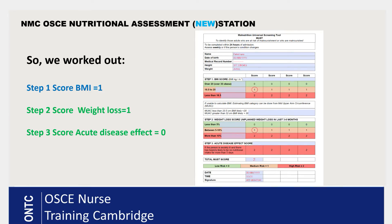Now plot those numbers into the documentation. This document will be given to you — add the details from the scenario: name, date of birth, MRN number, height, and weight. They may already have some details completed. Add the BMI score of one in step one, circle it, then circle the weight loss percentage score of one in step two. She scores zero for acute disease effect. Her total score is two, which is high risk of developing malnutrition. Then add your date, time, and signature — documentation is now complete.